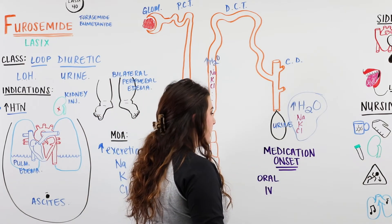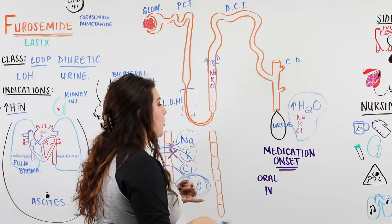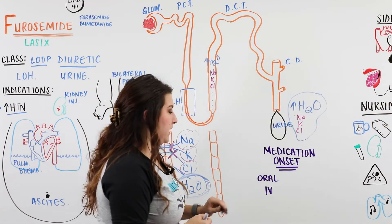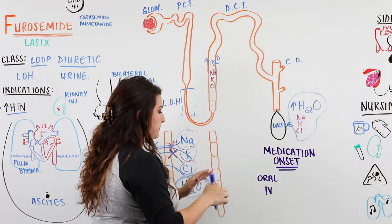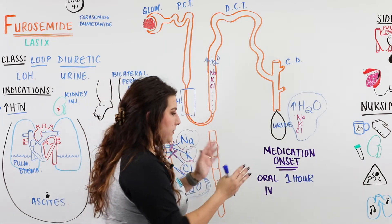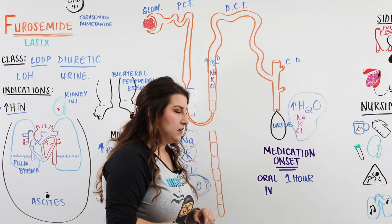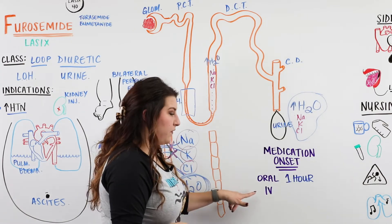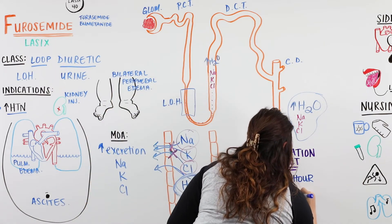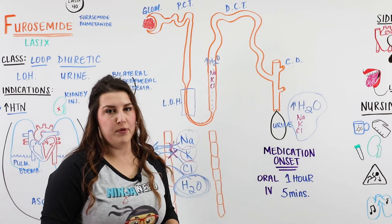Before giving this medication, we check for allergies to sulfa or Lasix and any other contraindications, including other medications that might interact. Then we consider whether it's oral or IV. Oral onset is typically one hour — you'd let the patient know they may not feel the urge to urinate for about an hour. If the situation is more acute and we need to get the fluid off immediately, we give IV Lasix, which has an onset of five minutes.